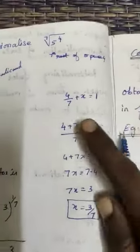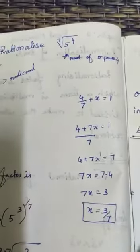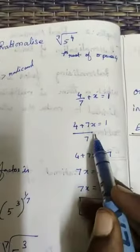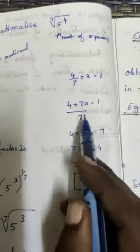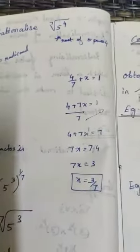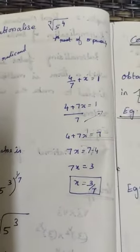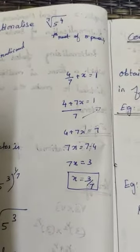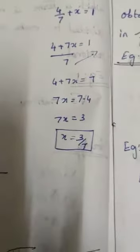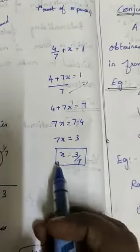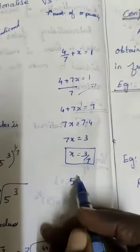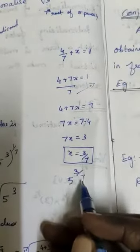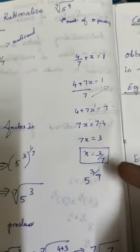We make it as 4 by 7 plus x equals 1. Taking 7 as LCM: 4 plus 7x. Using transmission method, divide becomes multiplication. 7x equals 7 minus 4, so 7x equals 3, x equals 3 by 7. We take 5 power 3 by 7 - when multiplied we get 7th root of 5 power 4.